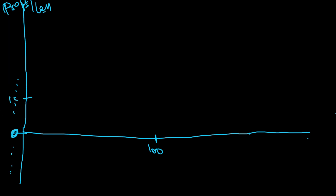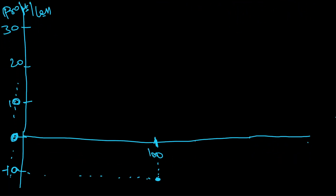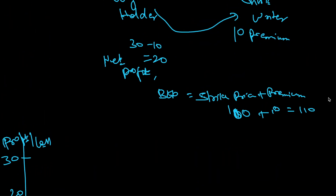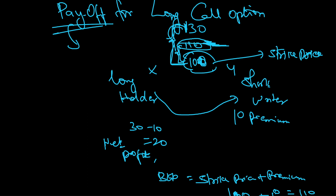Let me mark 10, 20, 30 for profit and minus 10 for loss on the y-axis. The moment I enter into the contract, I am losing 10 because I paid the premium, so I am standing at minus 10. On the x-axis: 90, 100, 110, 120, 130, 140. When the price goes from 100 up to 110...